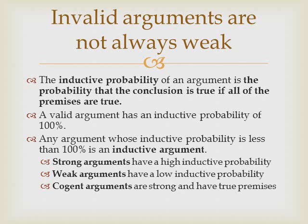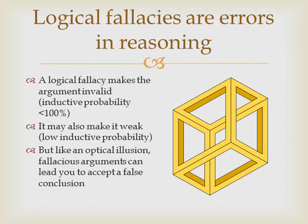An argument that is invalid is not necessarily a bad argument — it just means that it's not ironclad. The probability that the conclusion is true, given that the premises are true, is not 100%. The inductive probability of an argument is the probability that the conclusion is true if all of the premises are true. A valid argument has an inductive probability of 100%. Any argument whose inductive probability is less than 100% is, by definition, an inductive argument. Strong arguments have a high inductive probability, and weak arguments have a low inductive probability. If an argument is strong and all the premises are true, we describe it as cogent. Most of the arguments that we make in science are actually inductive arguments.